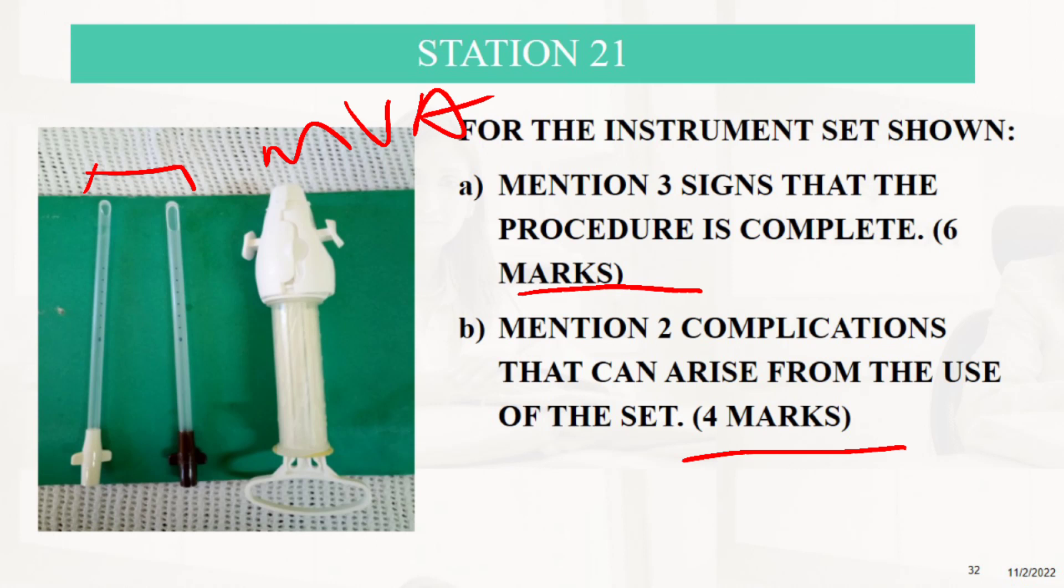Another sign is when the patient complains of cramping pain, which is severe abdominal pain indicating that the uterus is contracting. Also, when you start to see bright red blood - those are some of the indications when the procedure is completed.